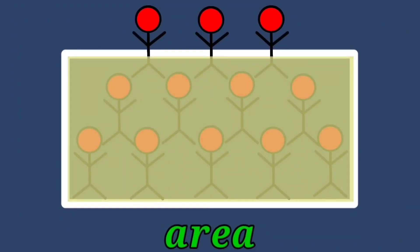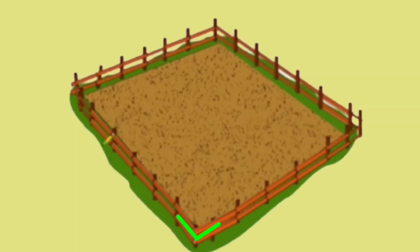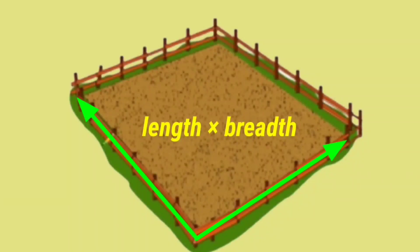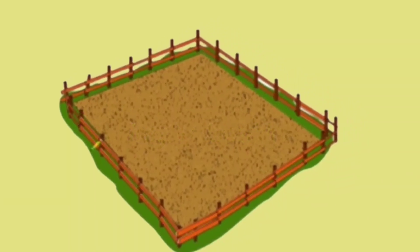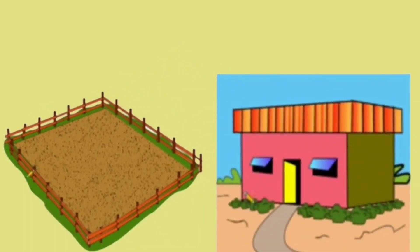Dear students, in our previous chapter, we have learnt about the surface occupied by two-dimensional figures. That is, the area. For example, the area of this land can be calculated by multiplying its length and breadth. If a house is built on this piece of land, it is enough for a family to live.